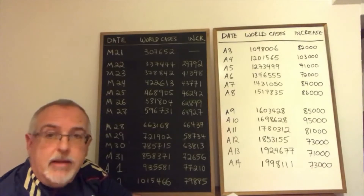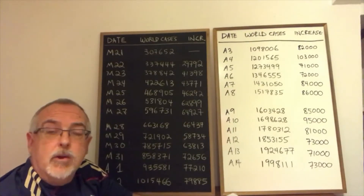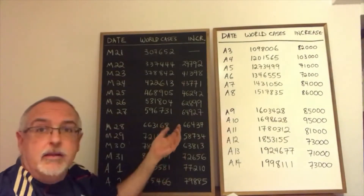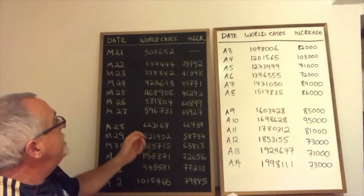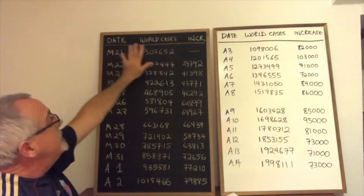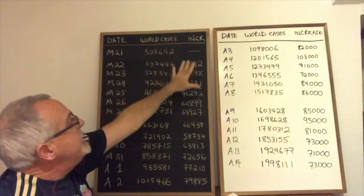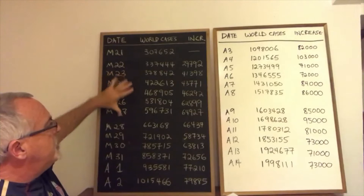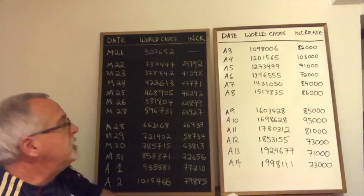Every day I went on this website and recorded the number of cases, and also calculated the difference so you can see the increase in new cases. What's showing on these charts is the date on the left, the number of world cases as reported by that website in the middle, and the increase on the right. I grouped the numbers by six days in order to compare with what was predicted.